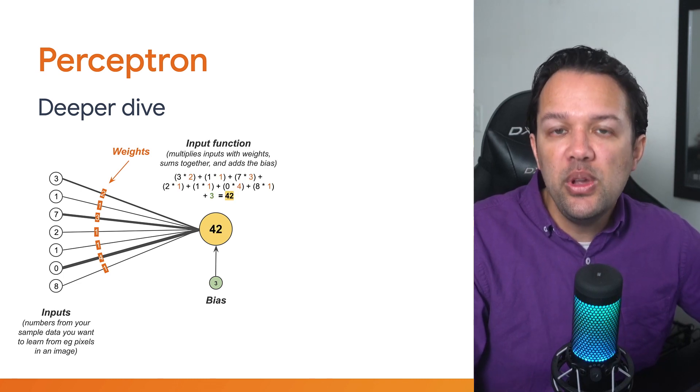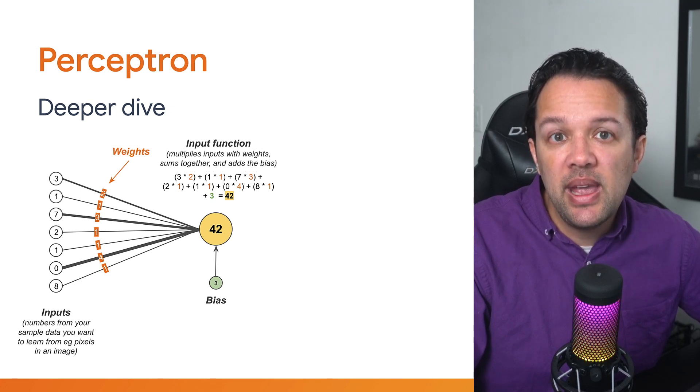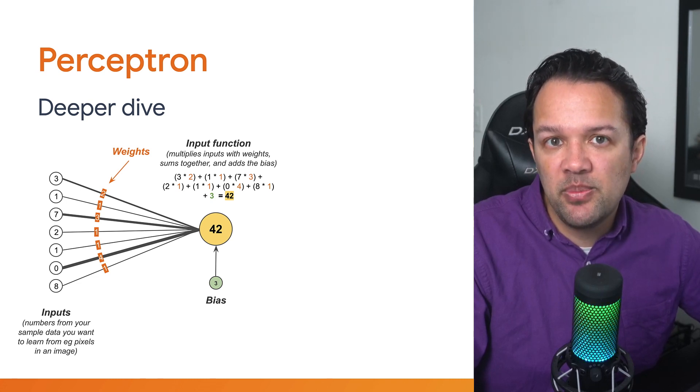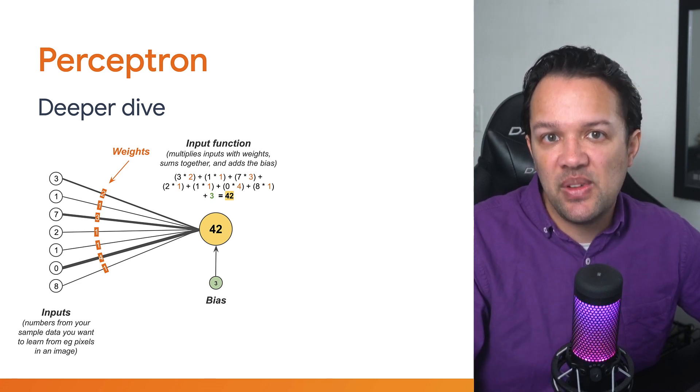So, what you have here is the first half of a perceptron. When you pass data into the perceptron, it will take each input number and multiply it by its corresponding weight. These resulting values are then summed together, and finally the bias is added to this total to add an additional offset if it needs to.